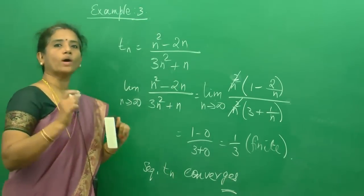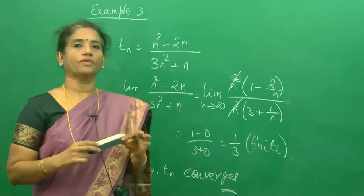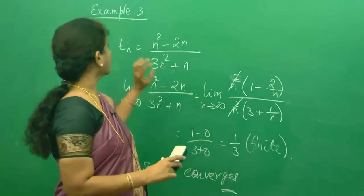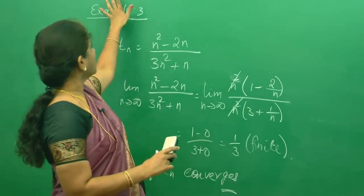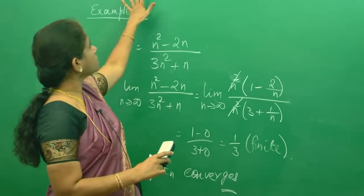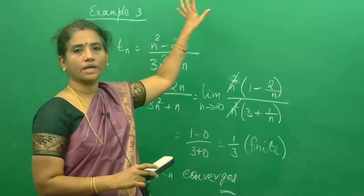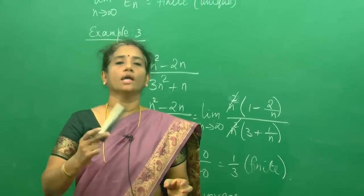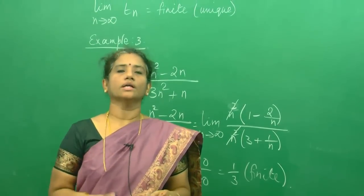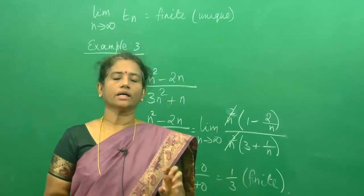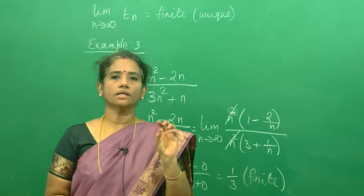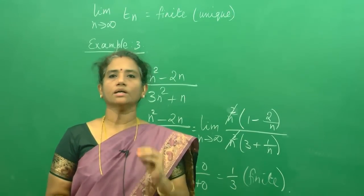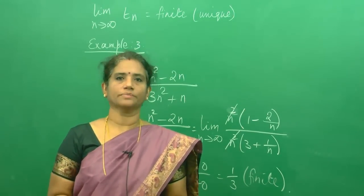So we learnt one rule for finding the convergence of a sequence: if the limit as n tends to infinity of the nth term is finite, the sequence is convergent. If it is not finite, it is not convergent. And that converging limit needs to be finite — that is the concept we learnt in this session.